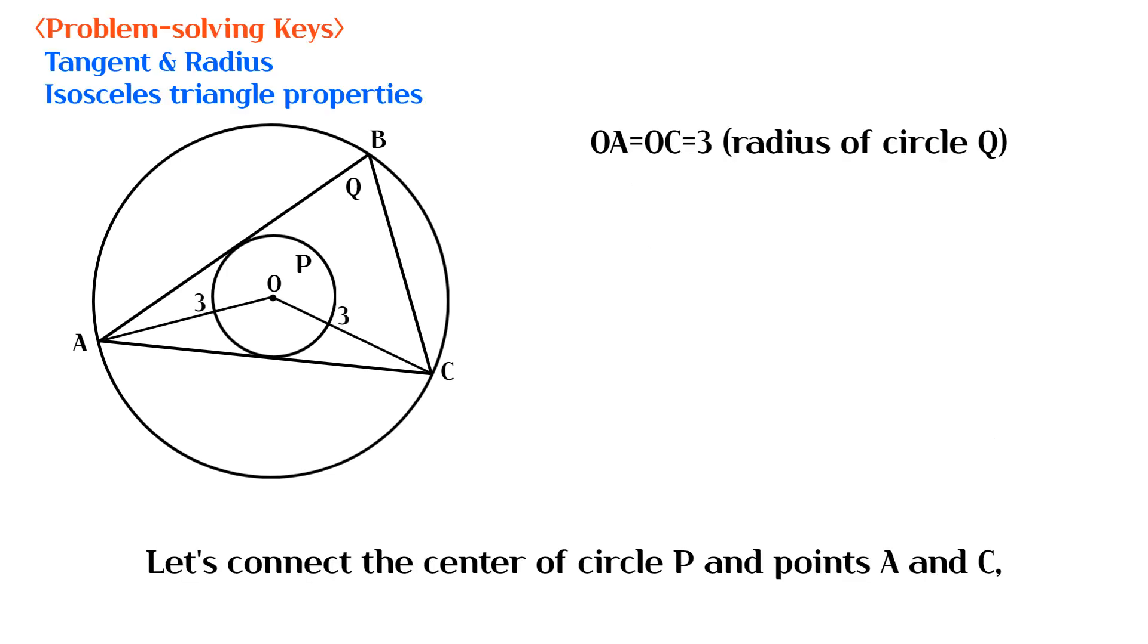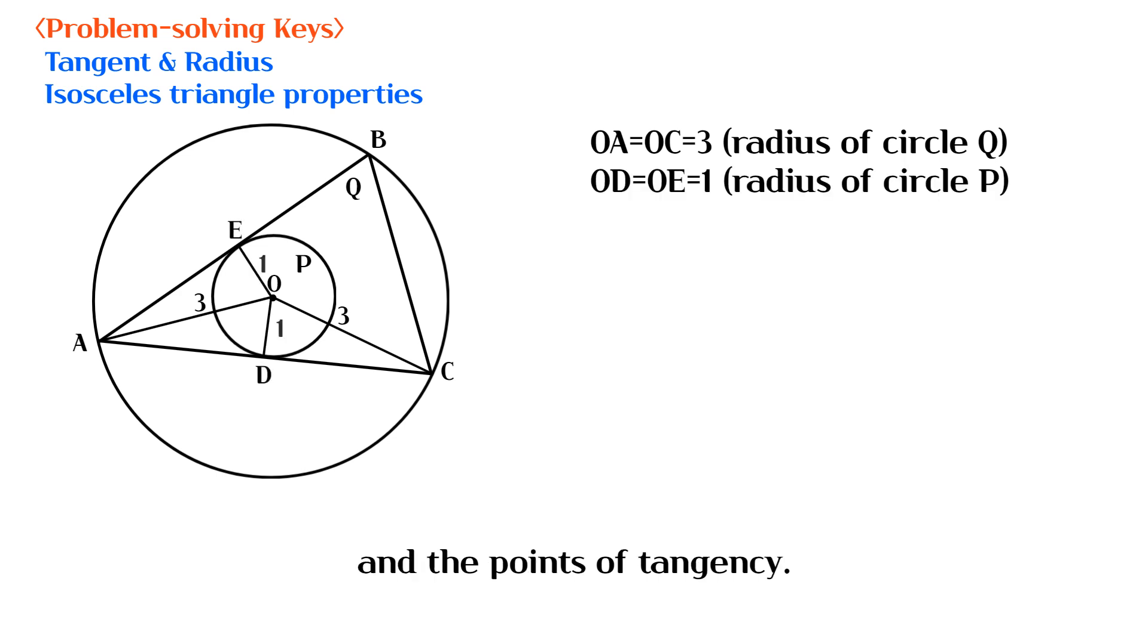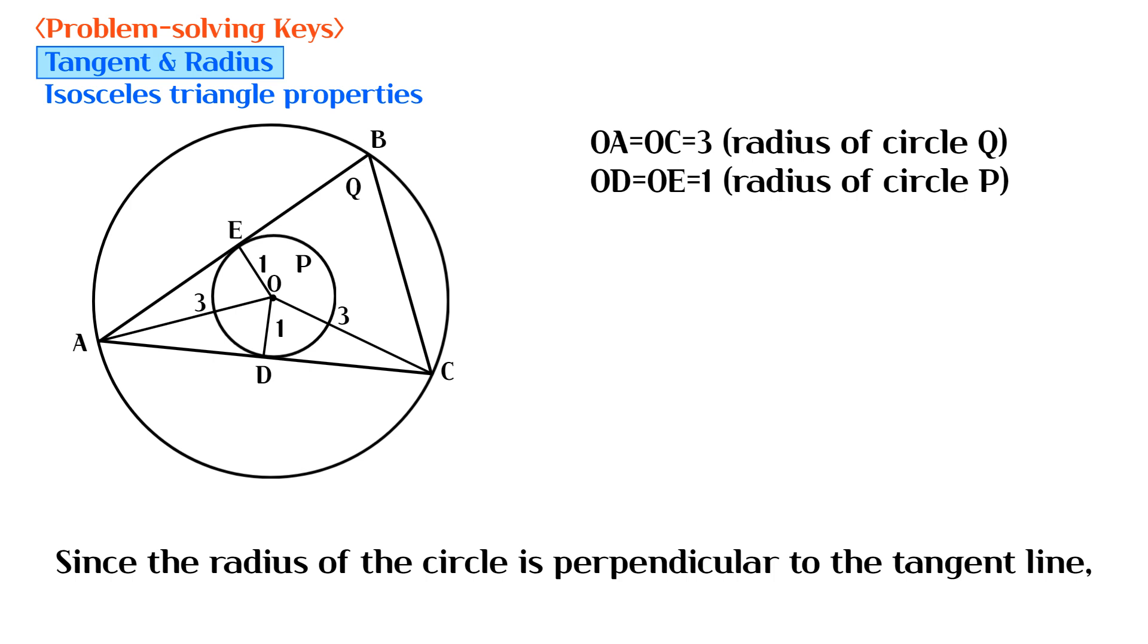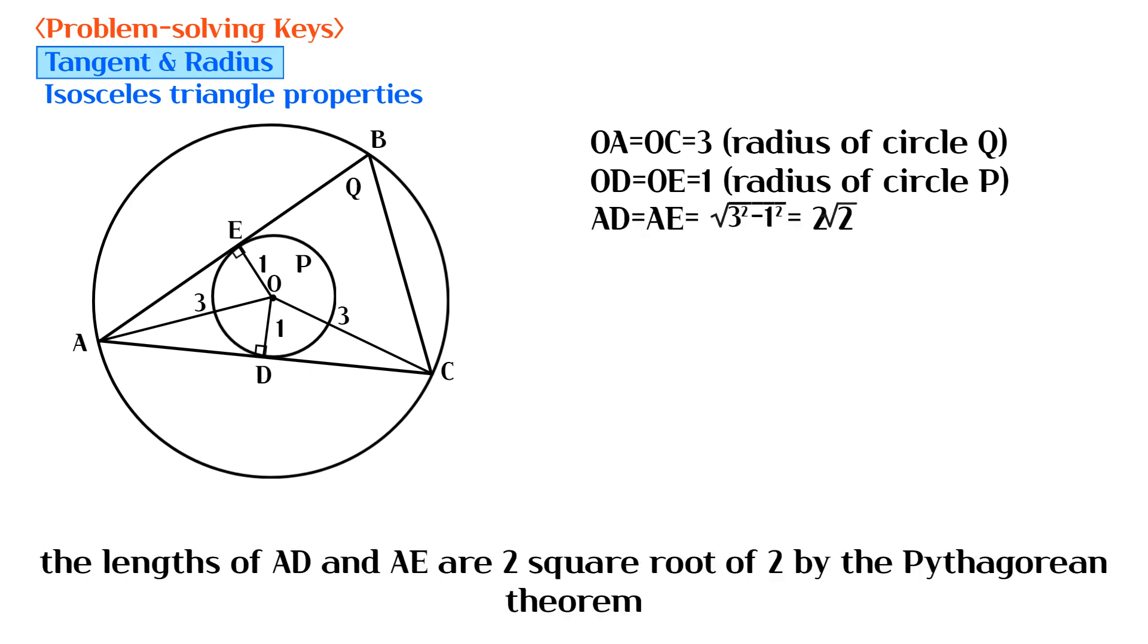Let's connect the center of circle P and points A and C, and the points of tangency. Since the radius of the circle is perpendicular to the tangent line, the lengths of AD and AE are 2 square root of 2 by the Pythagorean theorem.